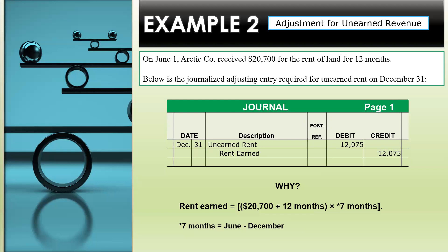How do we get this? Rent earned is $20,700 divided by the 12 months, times seven months. What's the seven months? The seven months is the period between June and December: June, July, August, September, October, November, December — that's seven months. So there's your equation to make this adjusting entry. We use the $20,700 divided by 12, get that amount, and then multiply that by seven months.